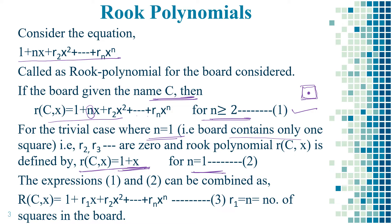By combining expressions 1 and 2, the rook polynomial is r(C, x) = 1 + r1·x + r2·x² + ... + r_n·x^n — let this be equation 3. Here, r1 = n, which equals the number of squares in the board. So alternatively, we can use r1 or n for the total number of squares present in the board.